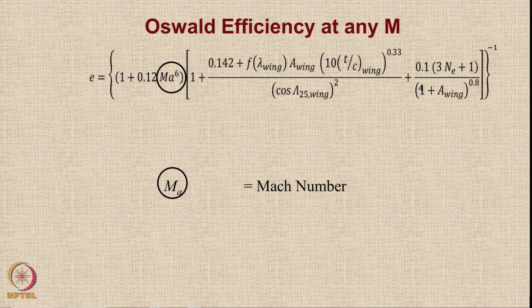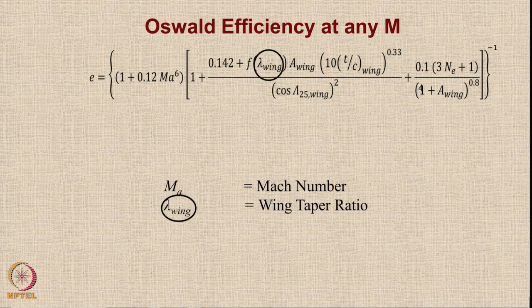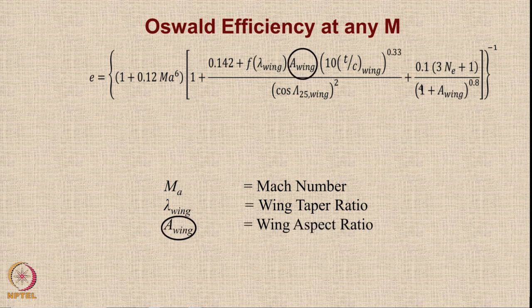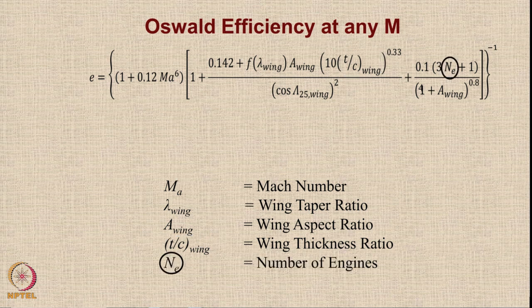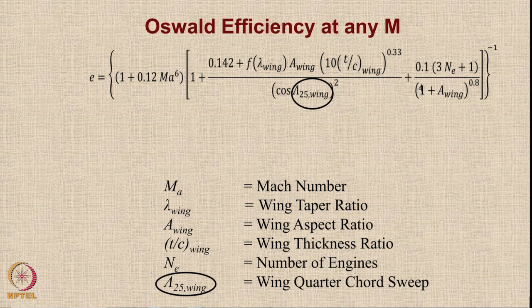The first parameter is the Mach number M_A. The formula shows that Oswald efficiency depends on the sixth power of Mach number. Then we have lambda wing, the wing taper ratio, and a function F(lambda wing) which we will calculate. A wing is the wing aspect ratio. T/C wing is the wing thickness ratio — we will use an average value. N_E is the number of engines. Lambda_25 wing is the quarter chord wing sweep. Once we have these parameters, we can calculate the value of E.